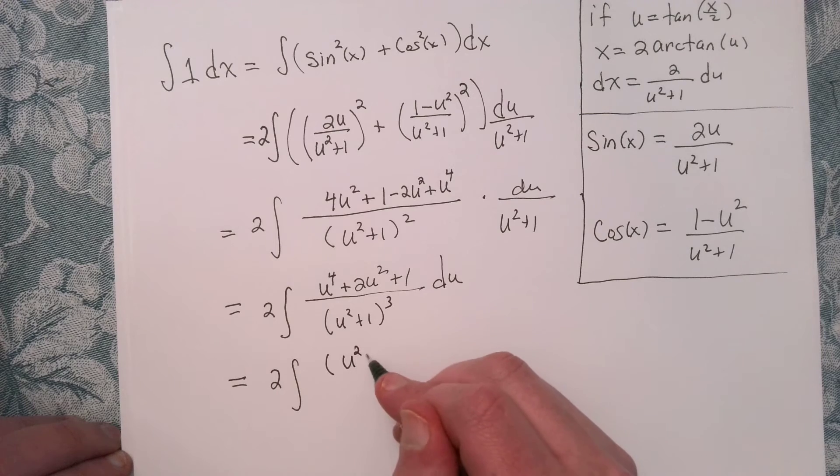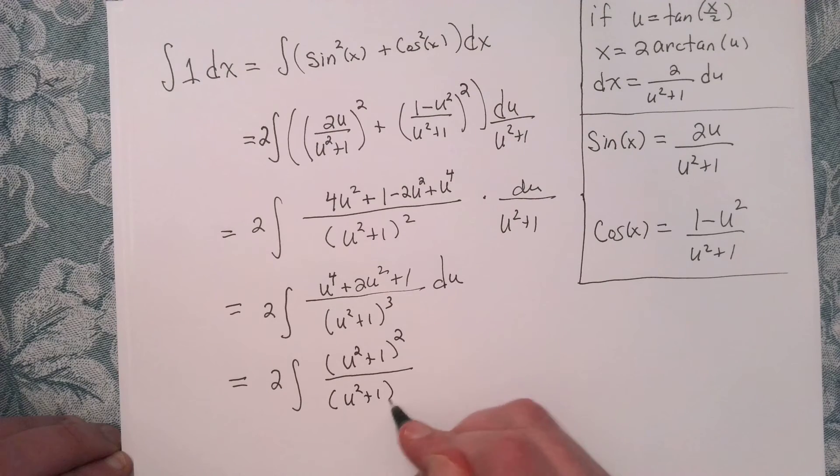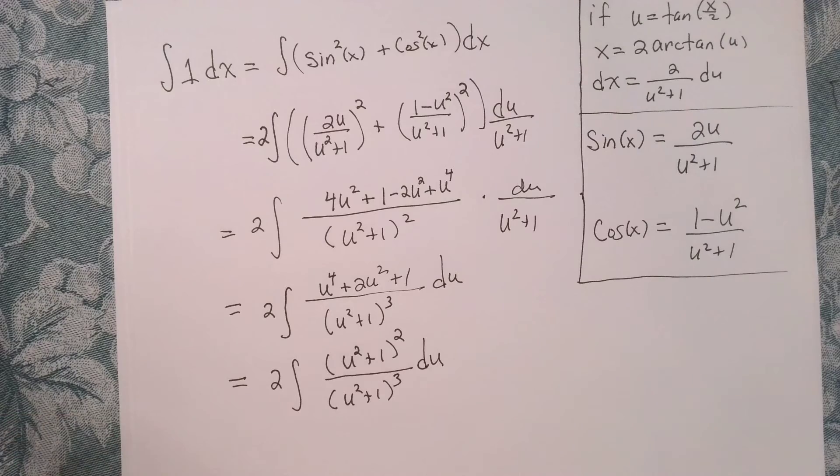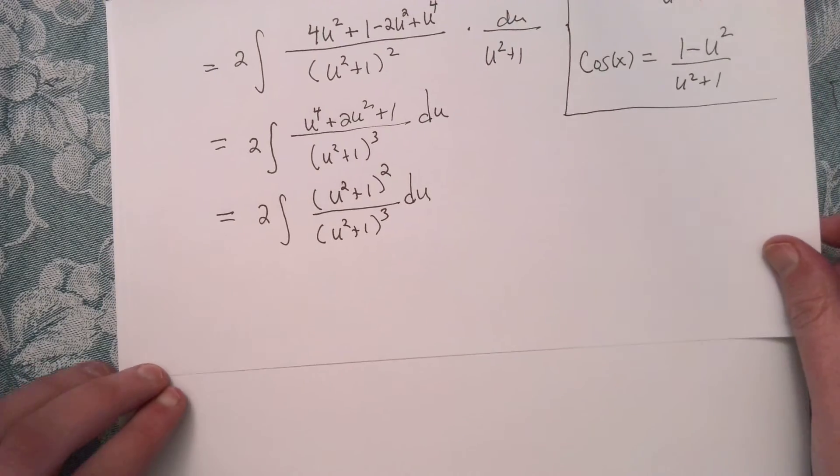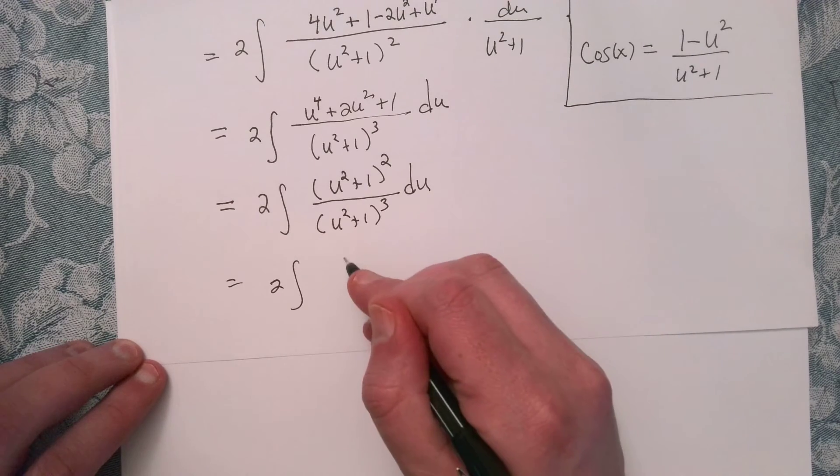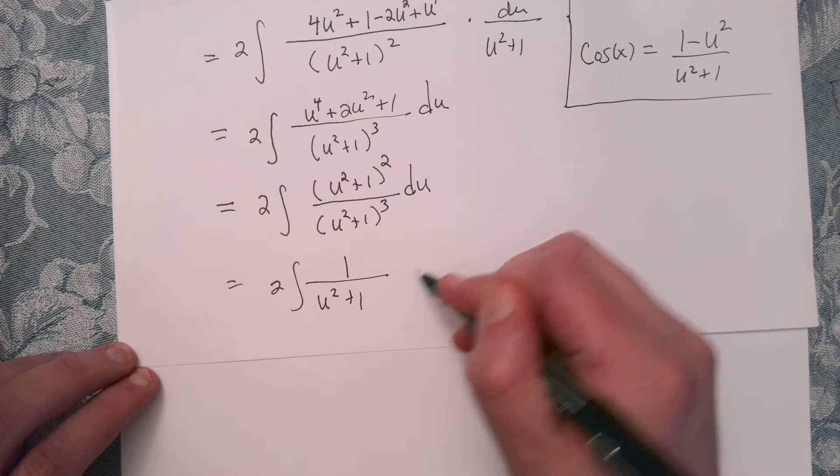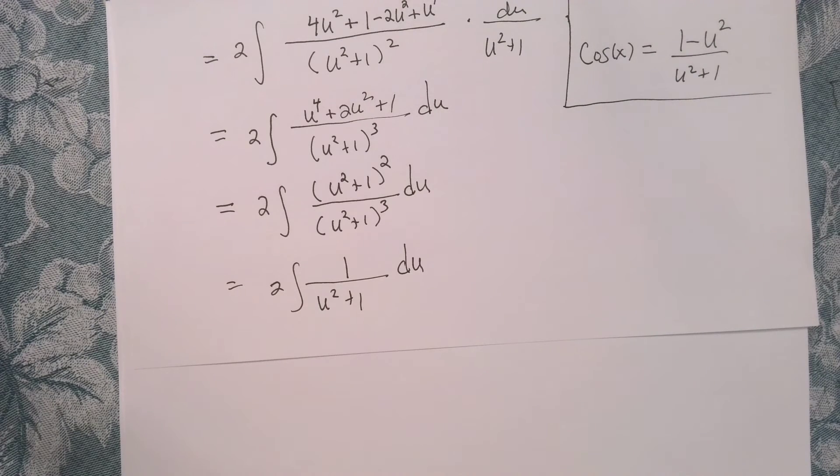We've got u squared plus 1 quantity squared over u squared plus 1 quantity cubed du. That seems really nice because we can do some algebra. We'll slide that up a bit. And let's see what happens. So we've got a little bit of canceling. And we get a classic here. So we've got 2 times the integral of 1 over u squared plus 1 du. And that's our old friend arctangent.